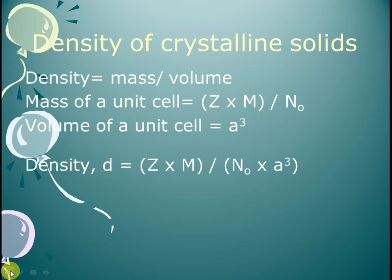The density of the unit cell is the same as the density of the substance. Out of the five parameters — d, z, M, a, and N_A — if any four are known, we can determine the fifth one. I will do a numerical example in the next video. Thank you all for watching.